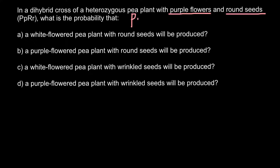We have to cross the genotype capital P lowercase p with capital R lowercase r, with another genotype that is also capital P lowercase p and capital R lowercase r. Because nothing is said about these two genes being on the same chromosome, we assume they independently segregate and are located on different chromosomes.